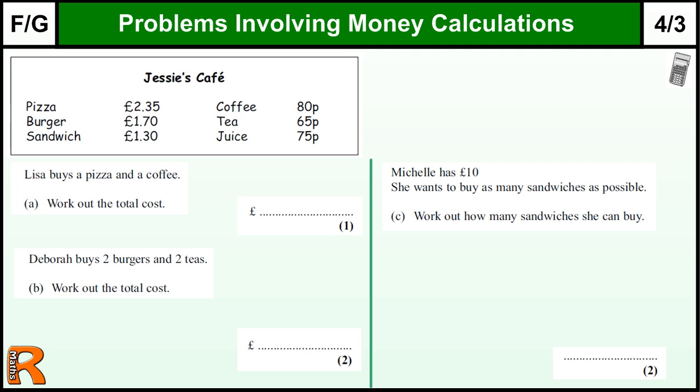Here we've got a question on problems involving money. Obviously this is a calculator question, so it's not very high level - Foundation GCSE level 3. Lisa wants to buy a pizza and a coffee, so we need to add those two things together.